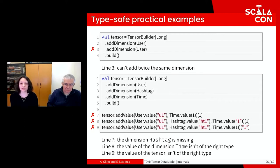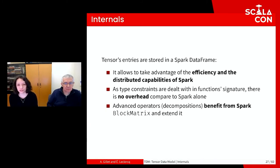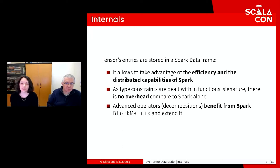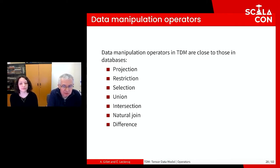To store the entries of a tensor, TDM uses the DataFrame from Spark. This allows benefiting from the efficiency and distributed capabilities of Spark without adding overhead compared to running Spark alone. For advanced operators such as decomposition, we use the machine learning part of Spark — specifically the block matrix — which efficiently distributes matrix operations. We add some operations to the block matrix when necessary. The operators of TDM can be split into two categories: data manipulation operators and tensorial operators.